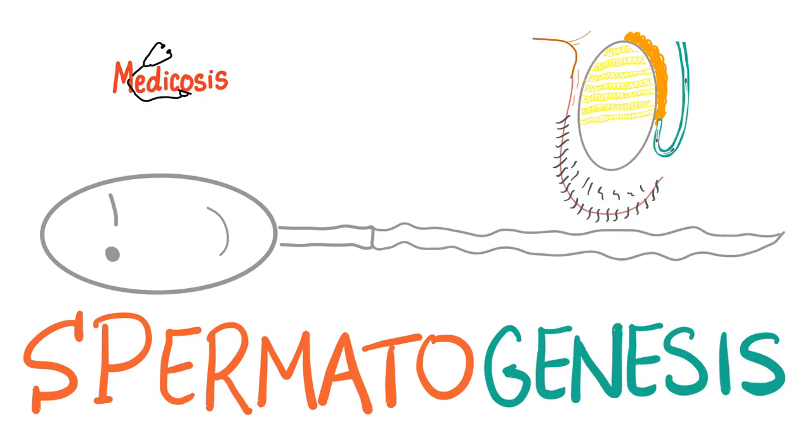Hey, it's Medicosis Perfectionalis, where medicine makes perfect sense. We continue our biology MCAT playlist. In the previous video, we started talking about the reproductive system. Today, we'll talk about spermatogenesis, or how males make sperm. I mean, look at this hairy testy. Let's get started.